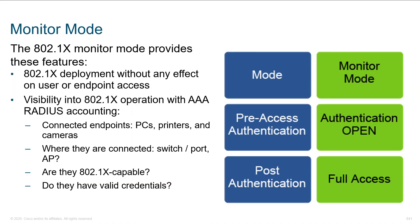Looking at these in a bit more detail: 802.1x gives us the ability to deploy without any effect on our end users or endpoints yet. We can turn it on without breaking anything. With monitor mode, we can look at what's going to happen before we break anything. We can enable this on a port-by-port basis, create a small test VLAN, make sure it works as hoped, and then deploy on a port-by-port and VLAN-by-VLAN basis so it won't be as disruptive should something go wrong.